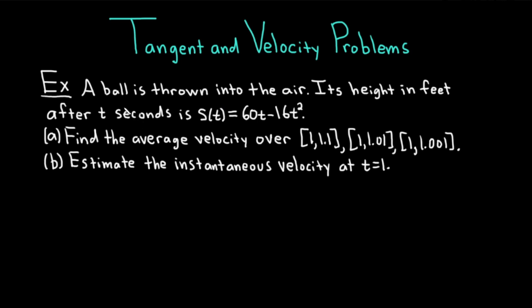Our example is the following. A ball is thrown into the air. Its height in feet after t seconds is given by the position function s(t) = 60t − 16t². In part A, we're being asked to find the average velocity over three intervals: [1, 1.1], [1, 1.01], and [1, 1.001]. You see that the interval gets smaller and smaller.